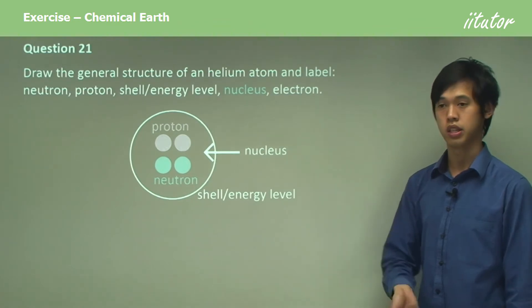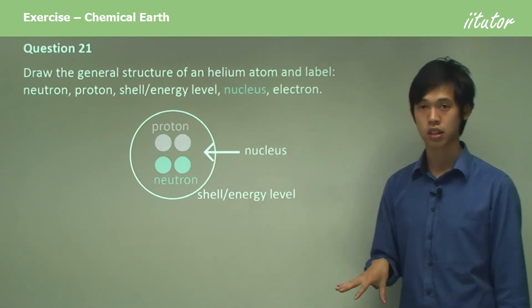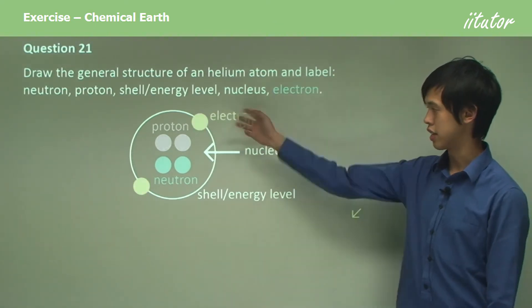And then the electrons. There's two electrons because it has to balance out the two protons, so there'll be two electrons in this shell energy level, and there are electrons.